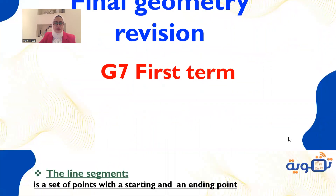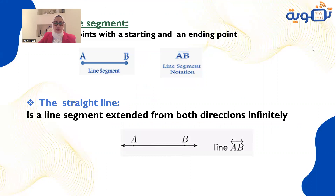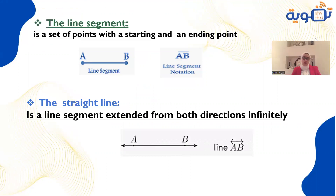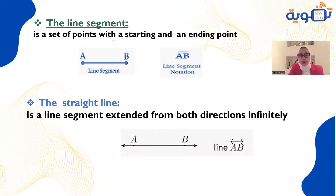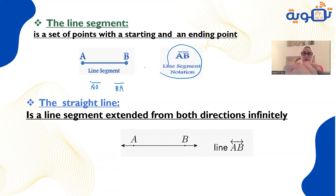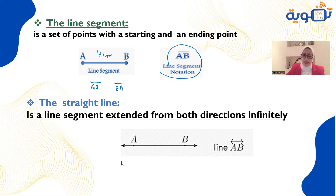At the beginning of this unit, I will give you a refreshment on the meaning of some geometric concepts. The line segment is a set of points with a starting and ending point. We can read it as AB, or BA — that's it. The line segment can be measured with a ruler, so it has a length like four centimeters or five centimeters.